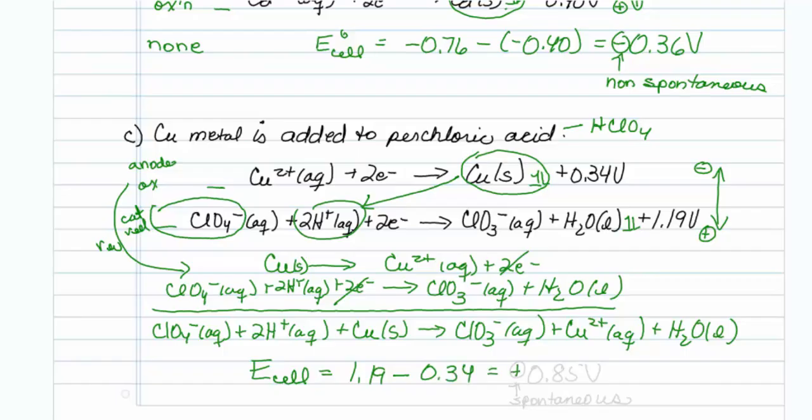So that gives me a +0.85 volts, and as previously discussed, positive means that we are dealing with a spontaneous at standard state reaction. That's all there is to those problems. Thank you.